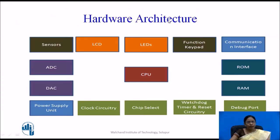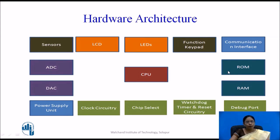Returning to the hardware architecture block diagram, let us discuss memory further. RAM (random access memory) is used for the usual execution of programs and instructions. ROM (read-only memory) stores permanent instructions and is used to store the firmware of an embedded system.